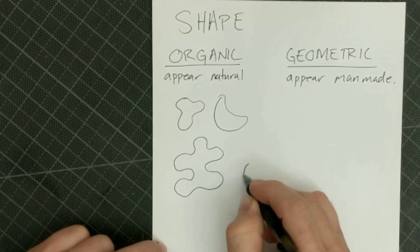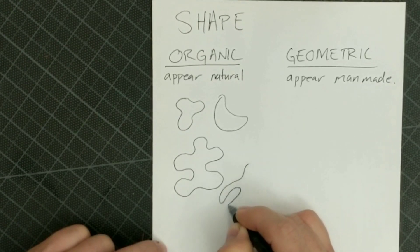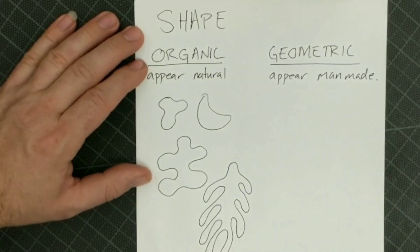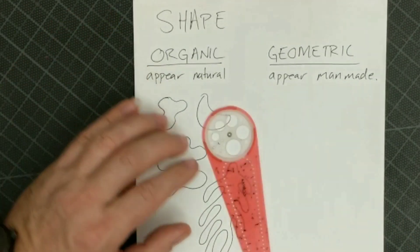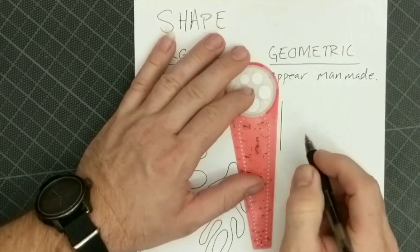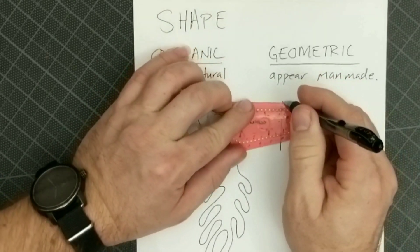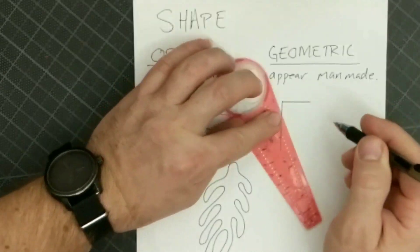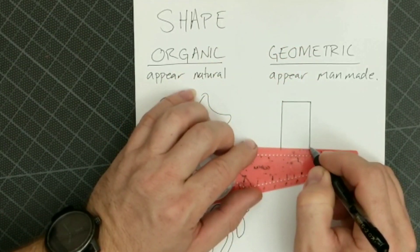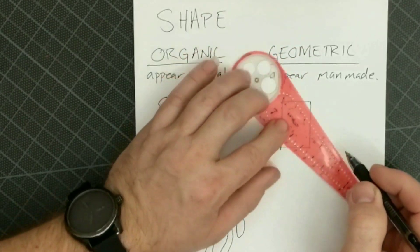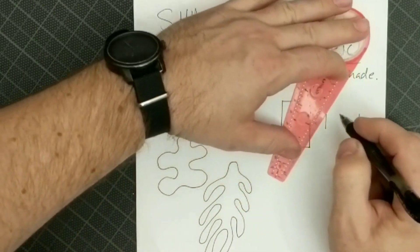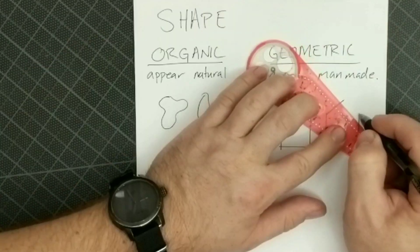Another example might be kind of a leaf or seaweed or kelp, coral. The opposite of that would be geometric shapes where I'm actually going to use sort of a ruler or a straight edge to create some of these shapes. So shapes that you've heard of like rectangles and squares and octagons or hexagons. These would be man-made shapes.